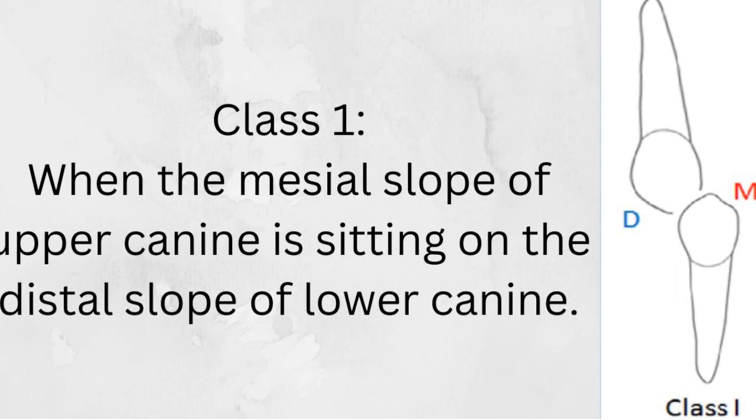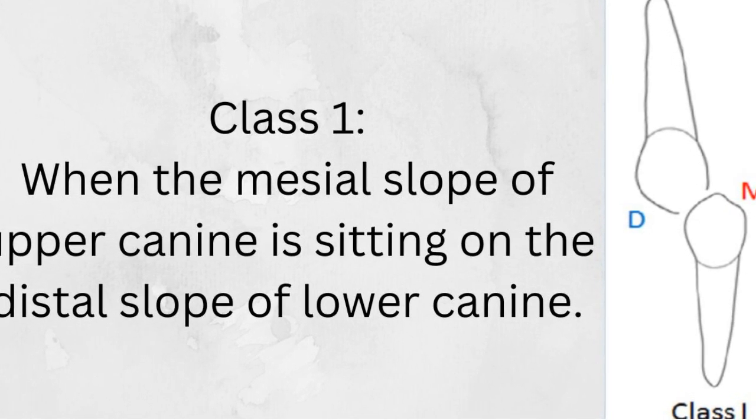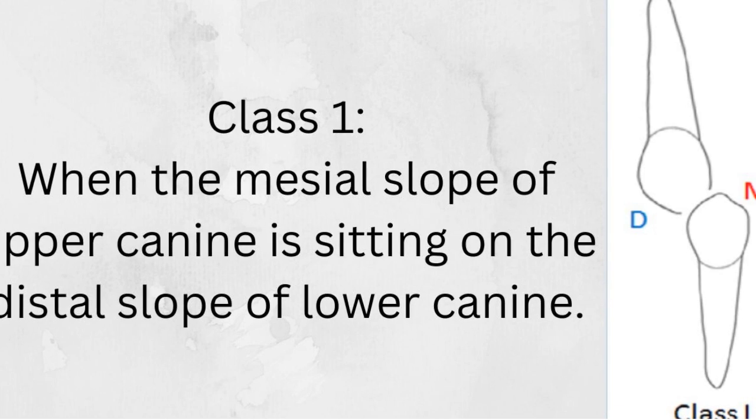In Class 1 canine relation, it is when the mesial slope of the upper canine is sitting on the distal slope of the lower canine.